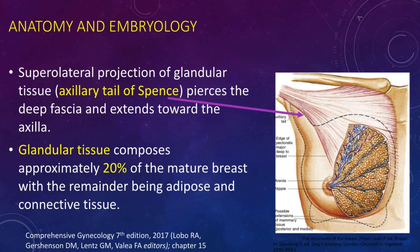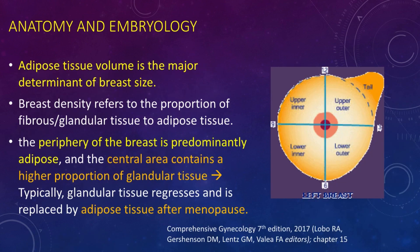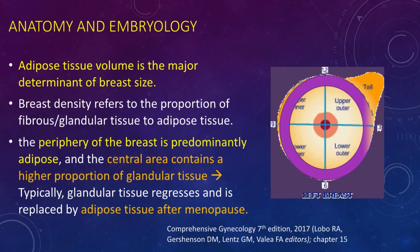Glandular tissue composes approximately 20% of the mature breast, with the remainder being adipose and connective tissue. Adipose tissue volume is the major determinant of breast size. Breast density refers to the proportion of fibrous or glandular tissue to adipose tissue. The periphery of the breast is predominantly adipose, whereas the central area contains a higher proportion of glandular tissue. Typically, glandular tissue regresses and is replaced by adipose tissue after menopause.